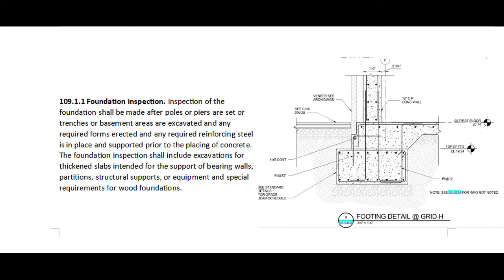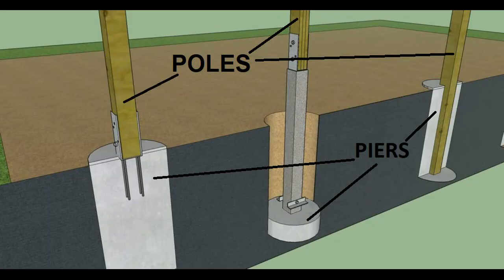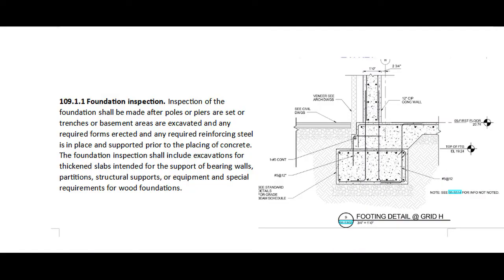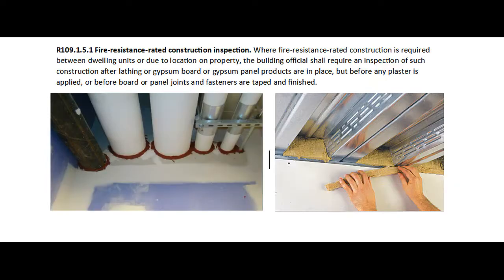R109.1.1 Foundation Inspection. Inspection of the foundation shall be made after poles or piers are set, or trenches or basement areas are excavated and any required forms erected, and any required reinforcing steel is in place and supported prior to the placing of concrete. The foundation inspection shall include excavations for thickened slabs intended for the support of bearing walls, partitions, structural supports, or equipment and special requirements for wood foundations.